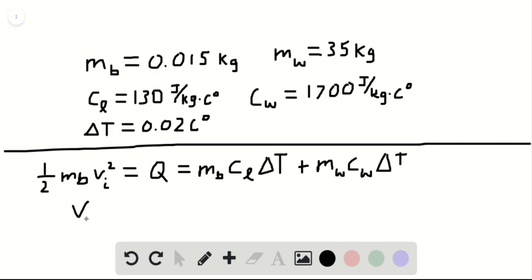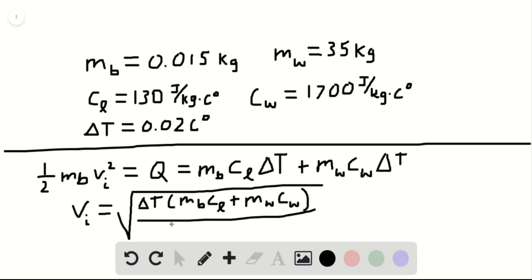So now we can solve this equation for V sub I. Well, V sub I squared, so to get rid of the squared, we're going to have to square root it. So V sub I is equal to the square root. I'm going to pull the delta T out front, since it's the same in both. Delta T times mass of the bullet, M sub B, times C sub L, plus mass of the wood times C sub W. Close the parentheses. And all that is going to be divided by one half times the mass of the bullet, M sub B.